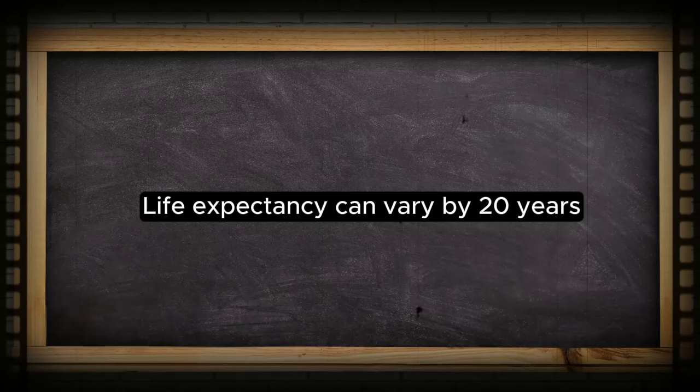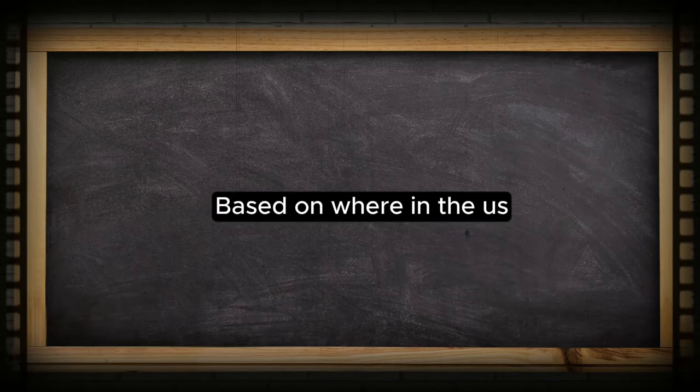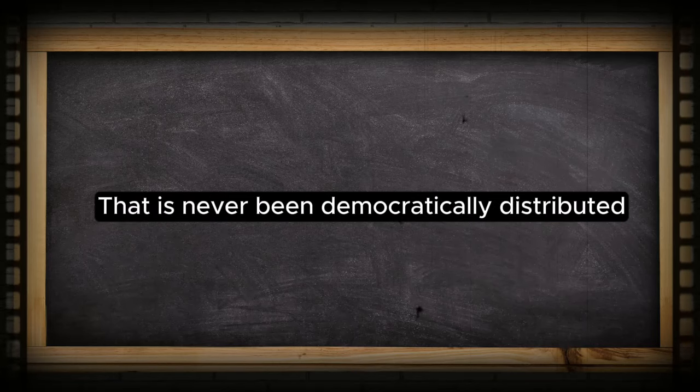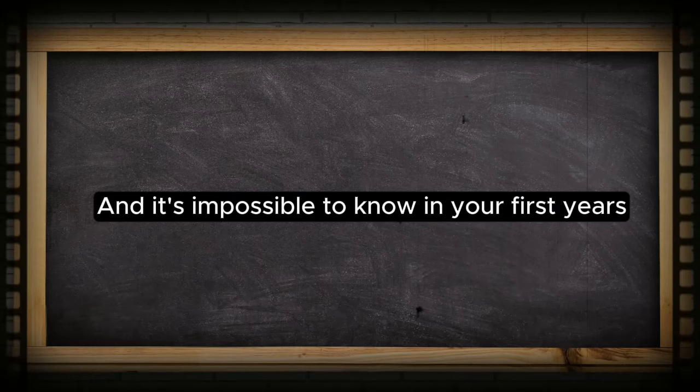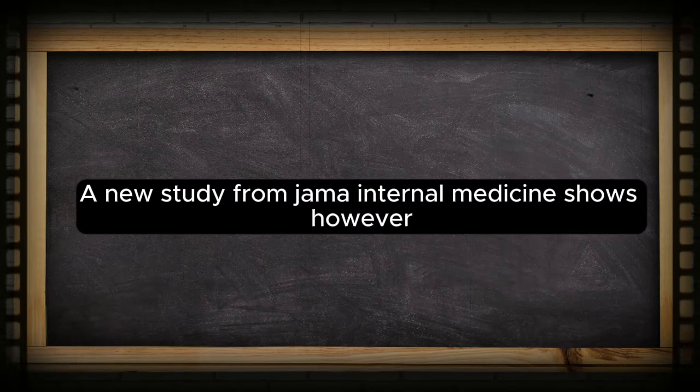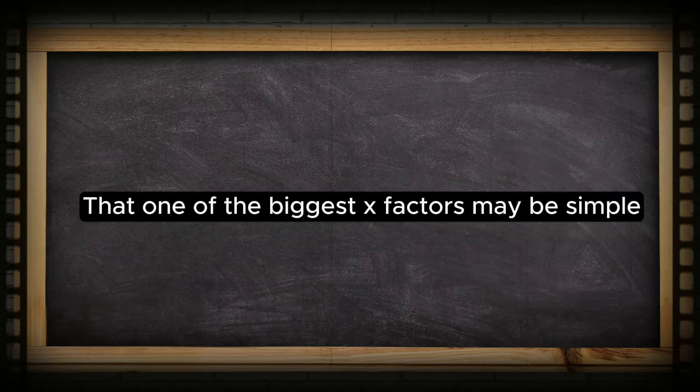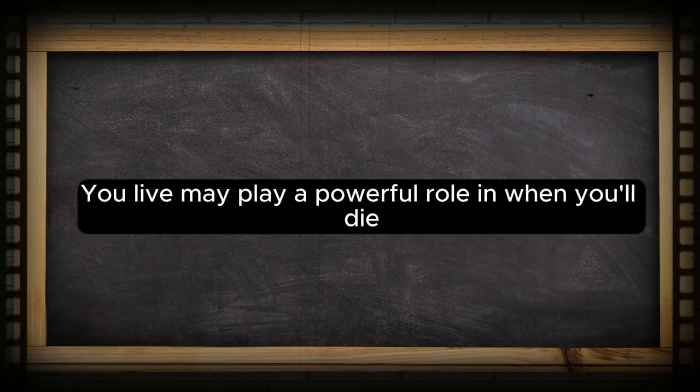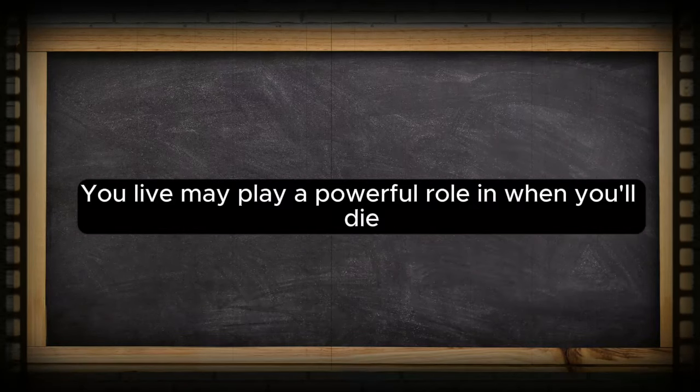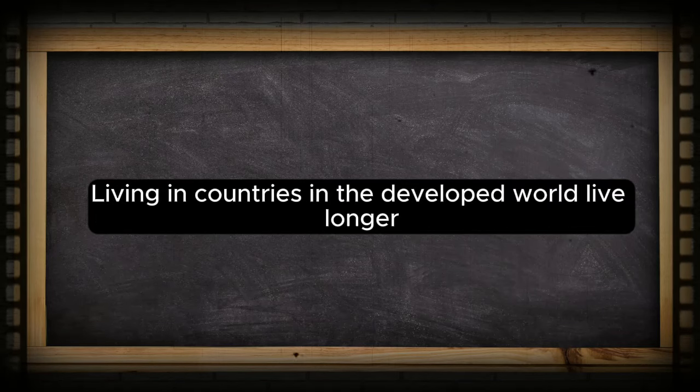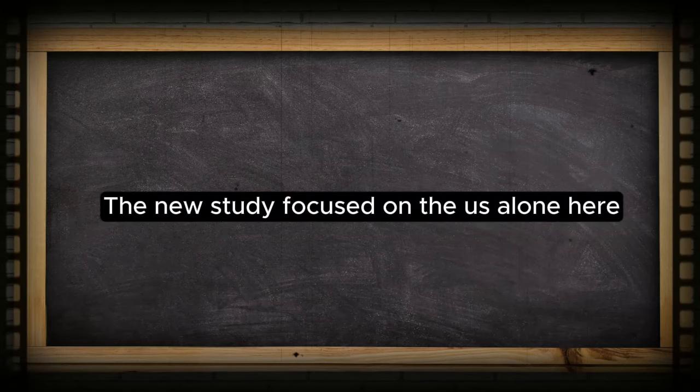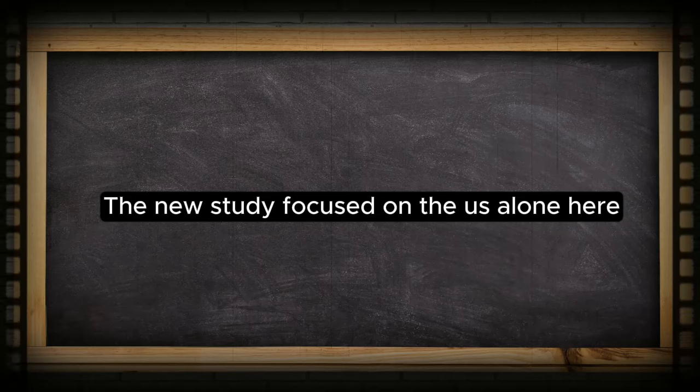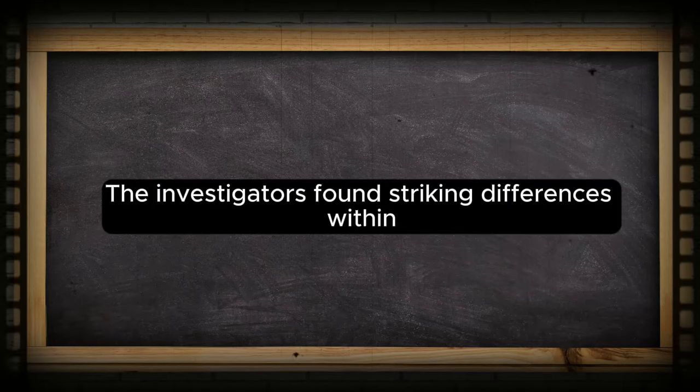Life expectancy can vary by 20 years, based on where in the U.S. you live. Long life is a gift that has never been democratically distributed. You may die young or old, and it's impossible to know in your first years just when your last ones will come. A new study from JAMA Internal Medicine shows, however, that one of the biggest X factors may be simple geography. Where you live may play a powerful role in when you'll die.